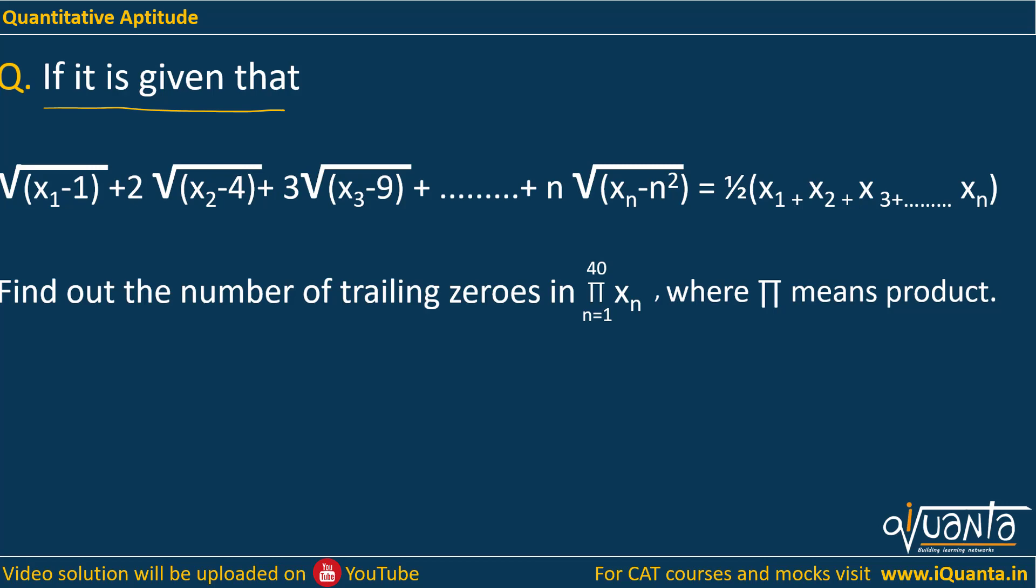It is given that if √(x₁-1) + 2√(x₂-4) + 3√(x₃-9) up to n√(xₙ-n²) equals ½(x₁ + x₂ + x₃ + ... + xₙ), then find out the number of trailing zeros in ∏(n=1 to 40) xₙ, where ∏ means product.